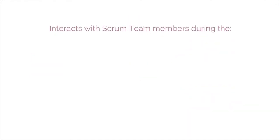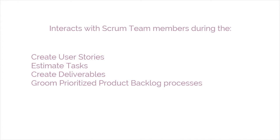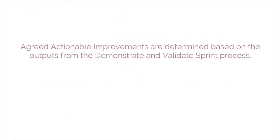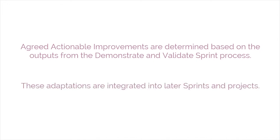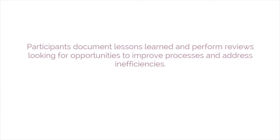The Scrum guidance body interacts with Scrum team members during the create user stories, estimate tasks, create deliverables, and groom-prioritize product backlog processes to offer guidance and provide expertise as required for the team to adapt to necessary changes and challenges. In the retrospect sprint process, agreed actionable improvements are determined based on the outputs from the demonstrate and validate sprint process. These adaptations are integrated into later sprints and projects. In the retrospect project meeting, participants document lessons learned and perform reviews looking for opportunities to improve processes and address inefficiencies.